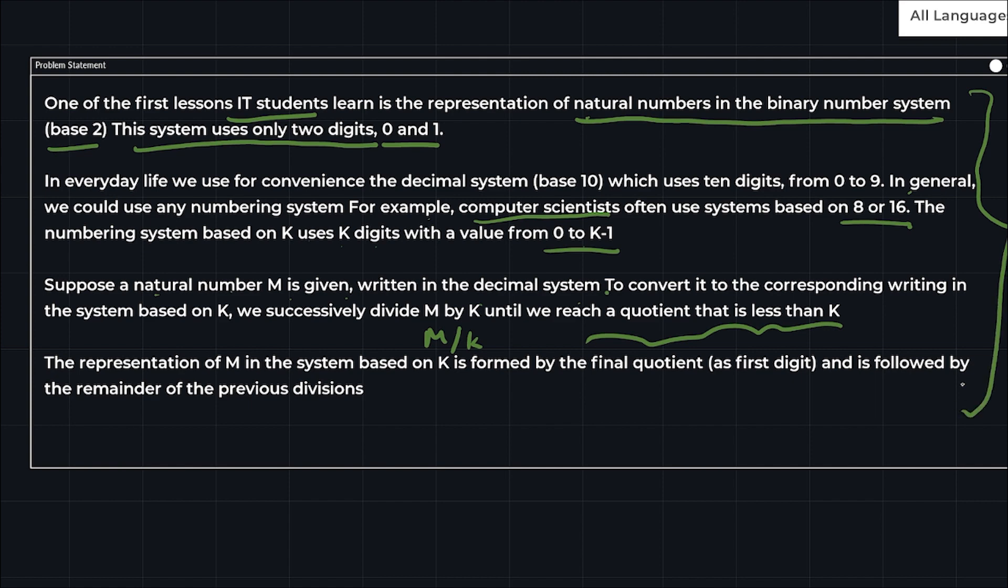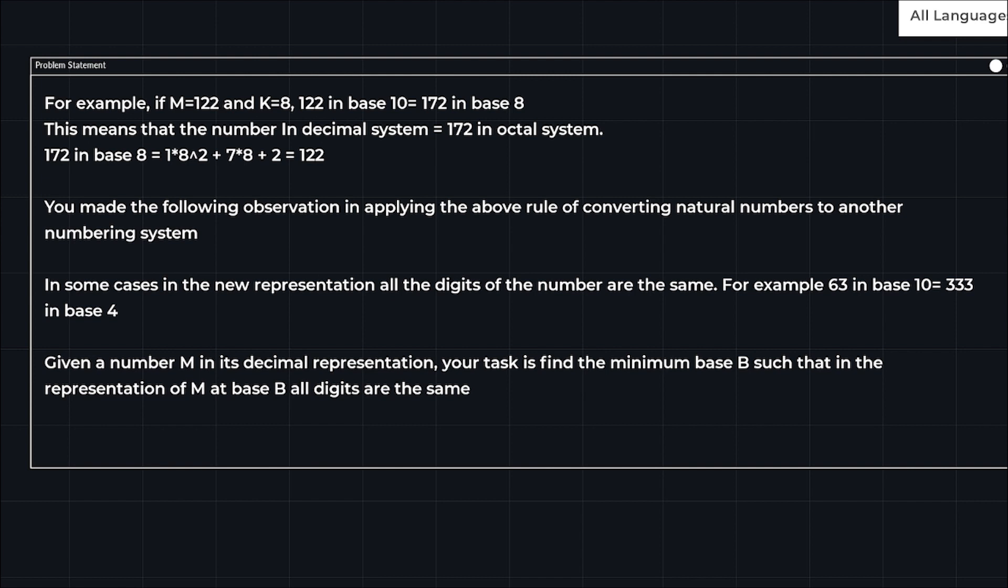I think they have written so much and it's confusing. Let's go to the examples. If M equals 122 and K equals 8, so 122 is in base 10. If we convert this into base 8, we get 172. This means the number 122 in decimal equals 172 in octal system. Then 172 in base 10, if we convert it into base 10, we will get 122.